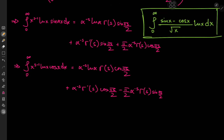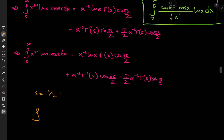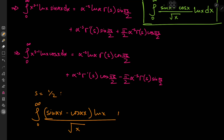We have a couple of interesting integral results, and now we have to piece everything together to get the target integral. All we need is s = 1/2. If s = 1/2 and we subtract the cosine integral from the sine integral, using linearity of integration, we have the integral from 0 to infinity of sine(alpha*x) minus cosine(alpha*x) with the log(x) term factored out. Since s minus 1 = negative 1/2, we get root x in the denominator — we've recovered the target integral.